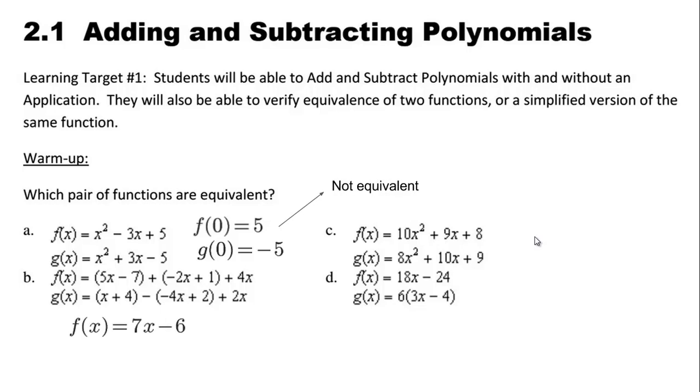For b, if we rearrange it and combine like terms, we get 7x minus 6. g(x) is 7x plus 2. Those are not equivalent because they're not the same thing. So f(0) would be negative 6, g(0) would be plus 2.